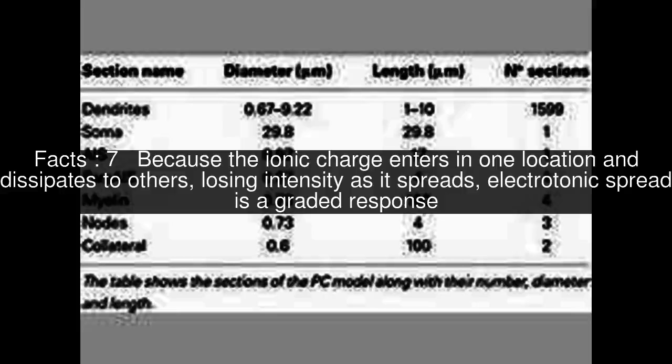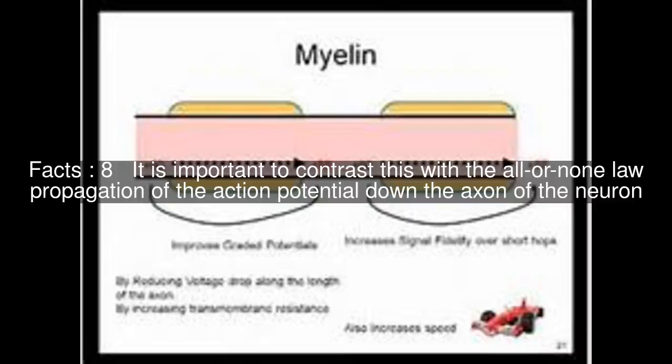Because the ionic charge enters in one location and dissipates to others, losing intensity as it spreads, electrotonic spread is a graded response. It is important to contrast this with the all-or-none law propagation of the action potential down the axon of the neuron.